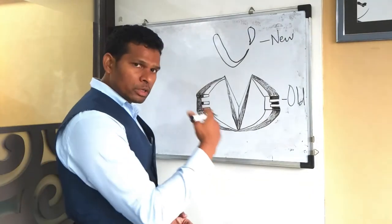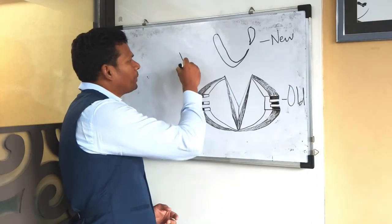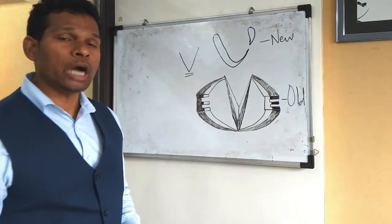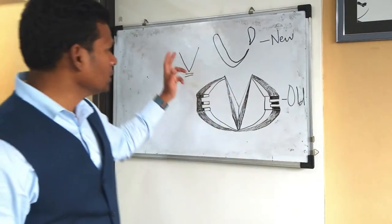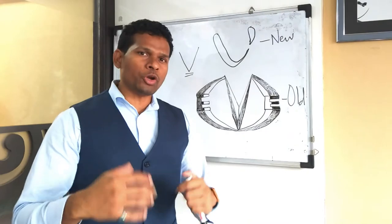If you observe the old logo, what you observe is they had a sharp angle at V. The angle is very sharp. Now when we talk about angles, angles represent sharpness, angles represent the analytical abilities.